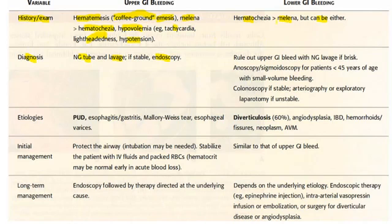In the case of lower GI bleed, always rule out upper GI bleed first with NG lavage if brisk. For patients who are less than 45 years of age with small volume bleeding, we have to do anoscopy and sigmoidoscopy.